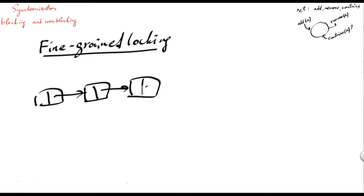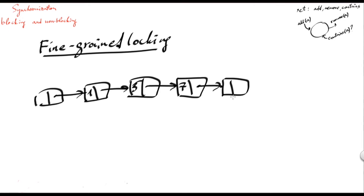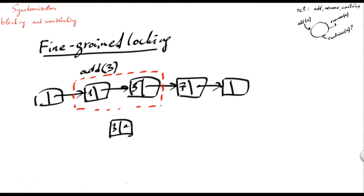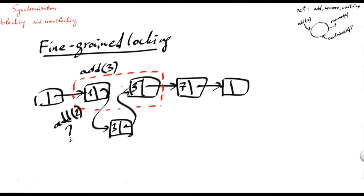For example, coming back to the example of two concurrent inserts: whenever add3 reaches the node storing 5, it will have it locked together with its predecessor. In this way it could create a new node storing 3 pointing to 5, and then redirect the next pointer of node storing 1 to 3, without being afraid that concurrent operation add2 would modify 1 and cause the element storing 3 to be lost. So add2 would have to wait until the lock on 1 is released, at which point node 1 already stores the correct pointer to 3 and not 5.